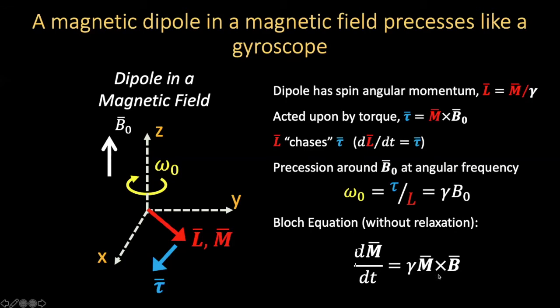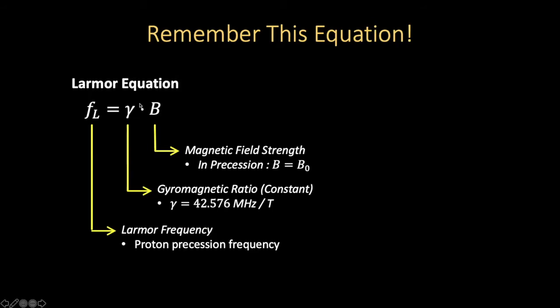We refer to this equation of motion as the Bloch equation without relaxation. Bloch was one of the founding contributors to understanding NMR. Please remember this equation — it's called the Larmor equation. The frequency of precession is related to the gyromagnetic ratio and the strength of the magnetic field that is applied. This is the one equation you would want to remember in MRI.